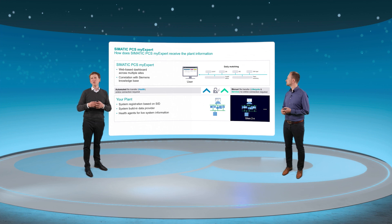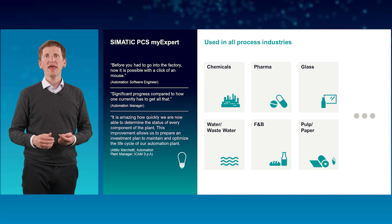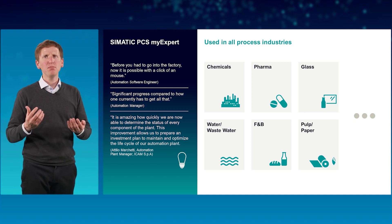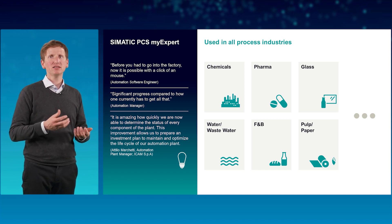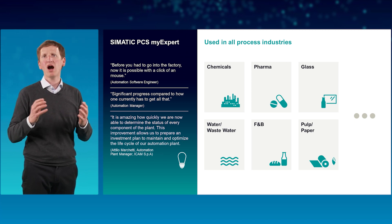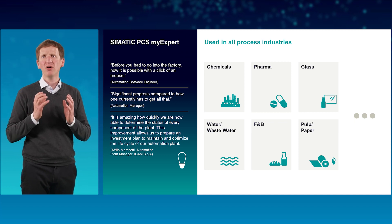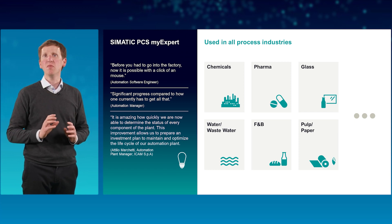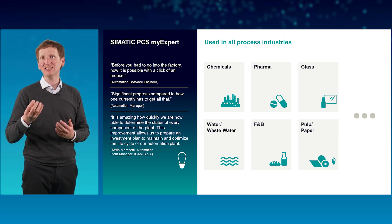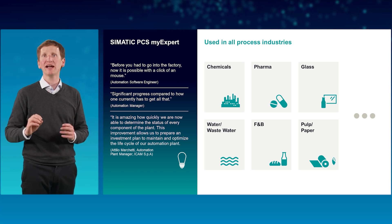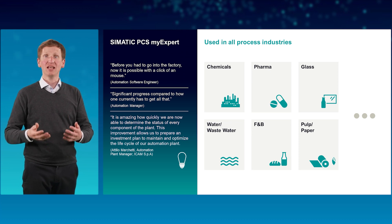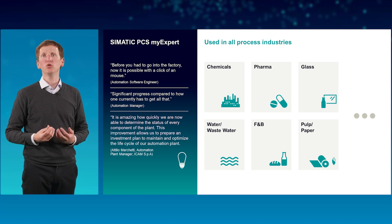SIMATIC PCS My Expert is used in various process industries, including chemicals, pharmaceutical, food and beverage, water, pulp and paper, and more. Some of our users use it in a single system and others for the entire DCS fleet around the globe. We have received huge amounts of positive feedback — people commenting that, and I quote, 'This improvement allows us to prepare an investment plan to maintain and optimize the life cycle of our automation plant.' This shows that our solution truly hits those pain points.